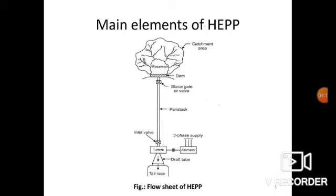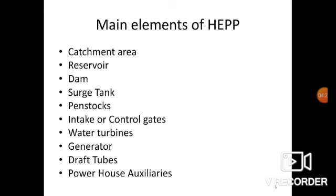Let's discuss all these elements one by one. First is the catchment area — the total area behind the dam in which water is collected and stream flow is obtained is known as the catchment area. Next is the reservoir — it is an important part of the power plant where water is stored and supplied to the water turbine continuously.